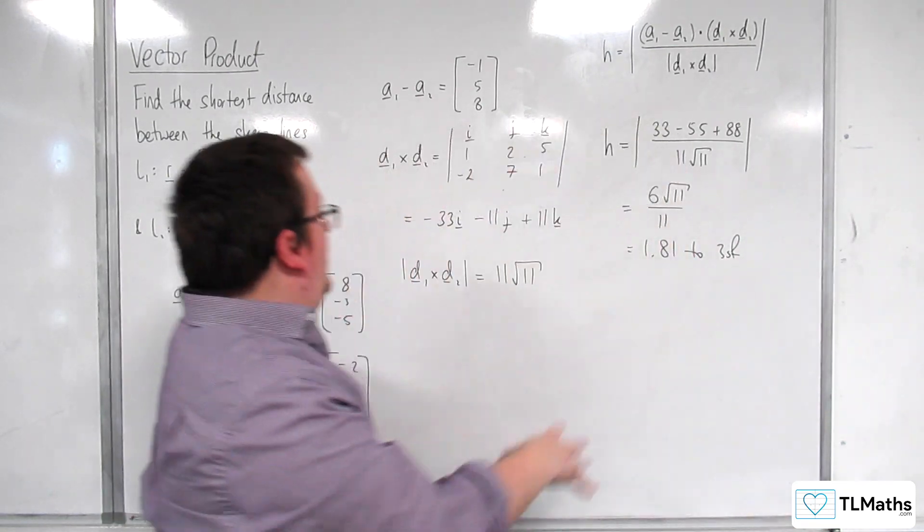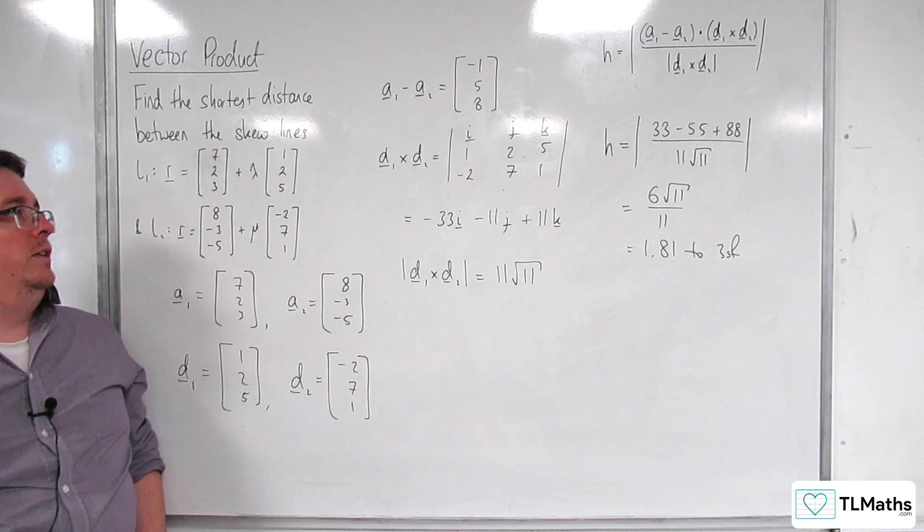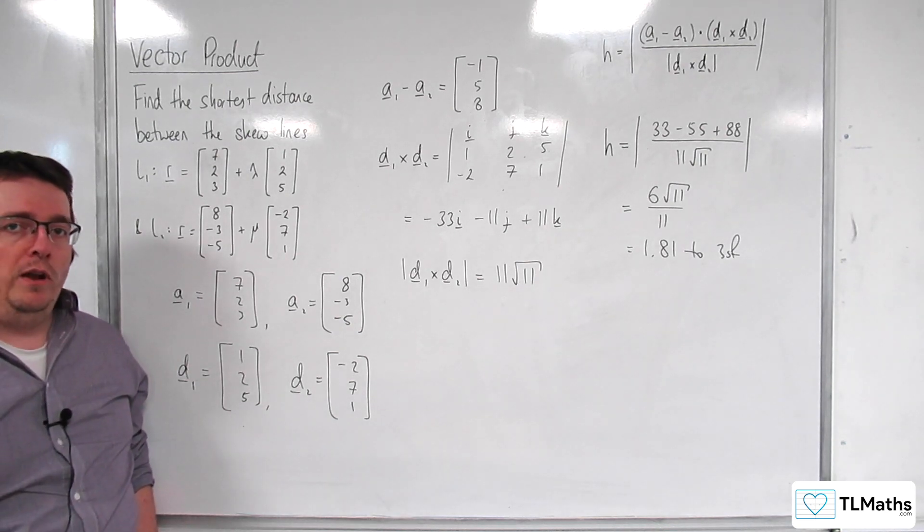Okay, so that's how we can just use the formula to work out the shortest distance between two skew lines.